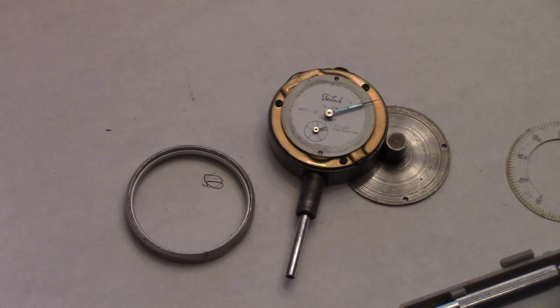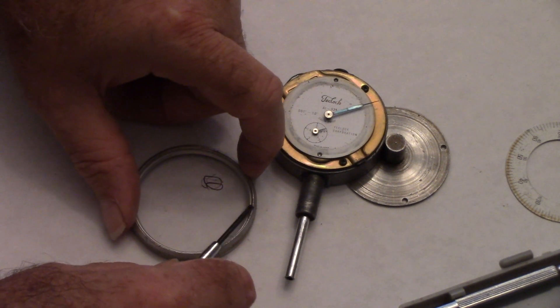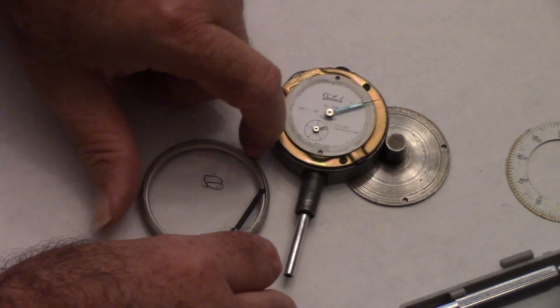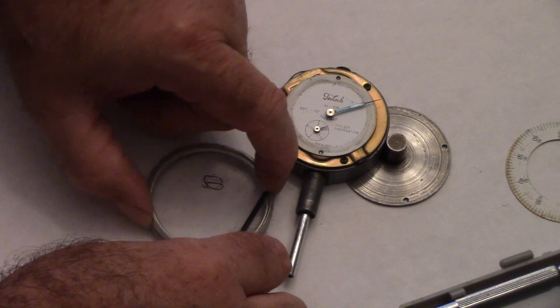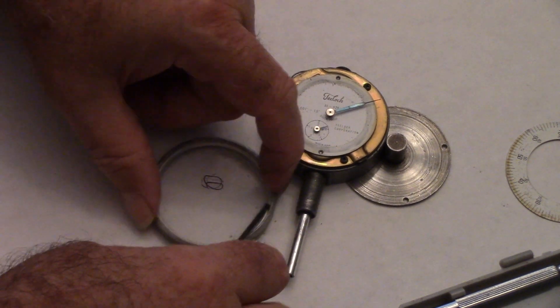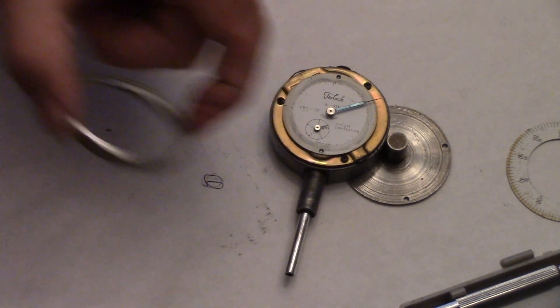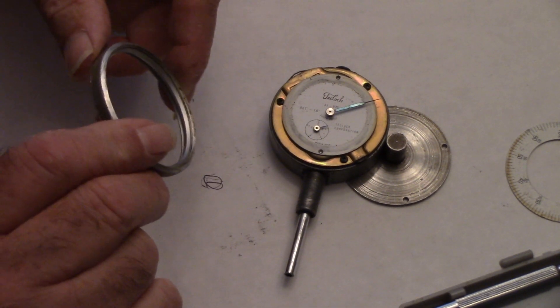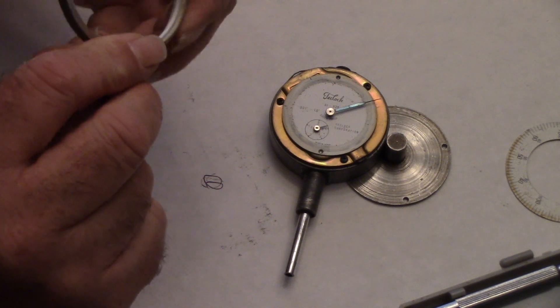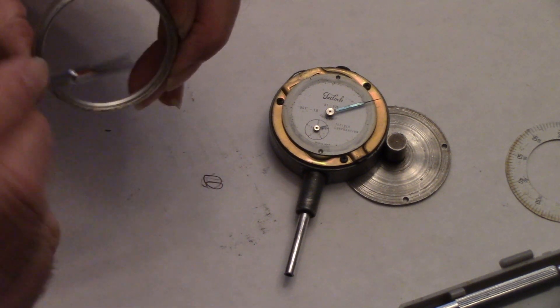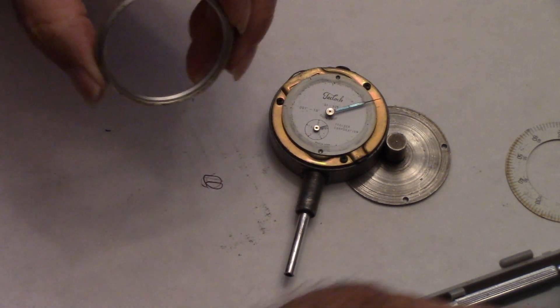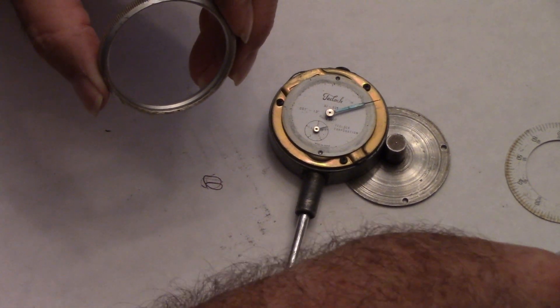I'll take this flat-tip screwdriver and go right around this ring here. I've already gone around that ring twice cleaning that out. Let me get a smaller one—maybe I can get in there a little better.